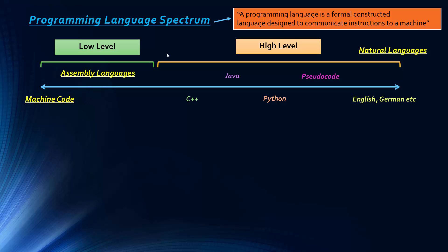High and low level refer to levels of abstraction. At the very bottom, machine code has very little abstraction from the hardware — it is directly executed by the hardware. Assembly languages just replace machine code with words, so they have slightly more abstraction. But something like Python has quite a large difference between the code and what's actually happening at the hardware level.